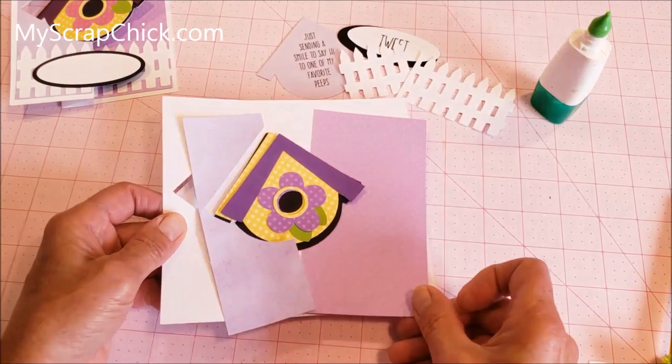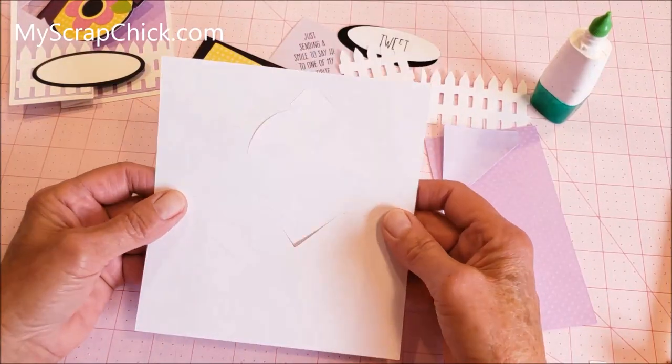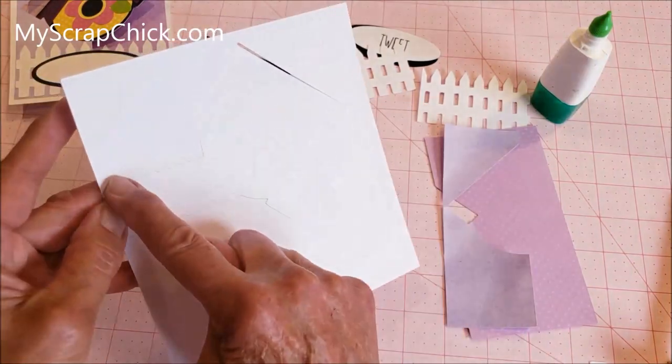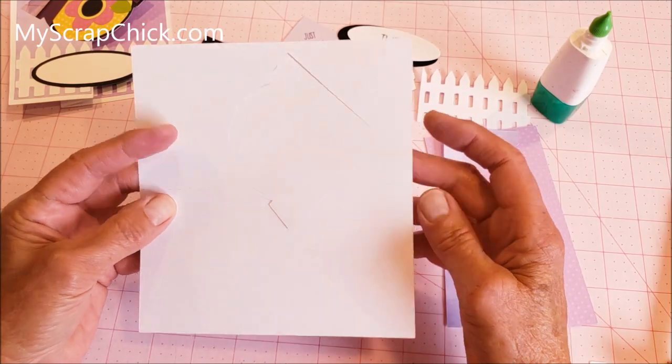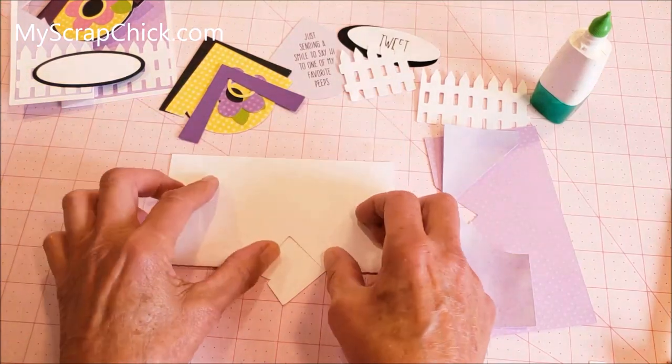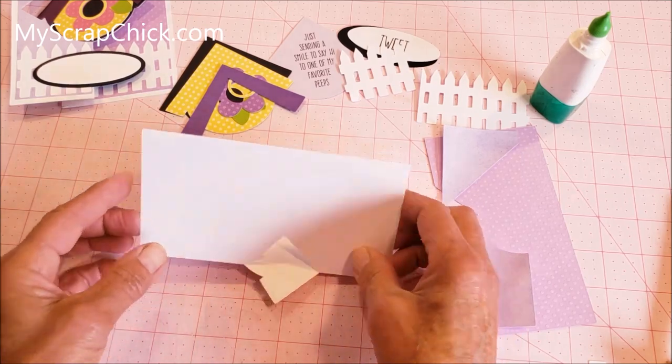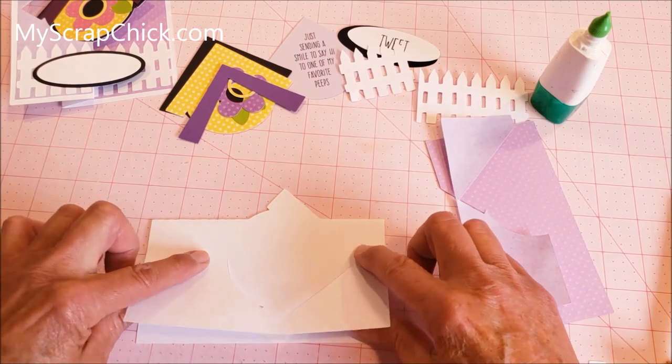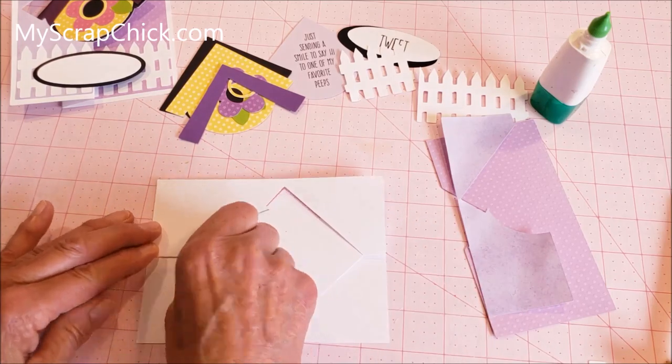Here we have all the pieces laid out. The first thing I'm going to do is fold the card. We've got score lines along here and here, and then these pieces are cut. We'll fold this along the score lines here, then turn it over to the front and there's two more score lines right here. We fold it like that and crease really well.